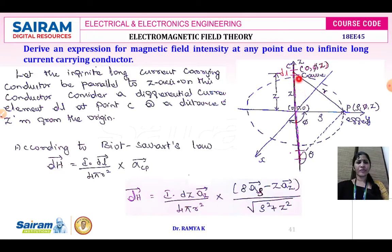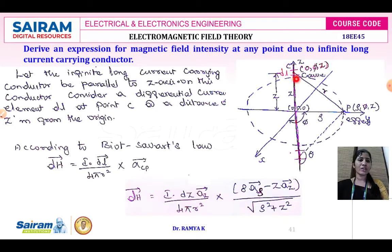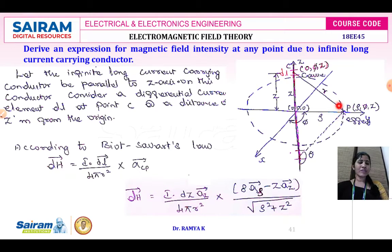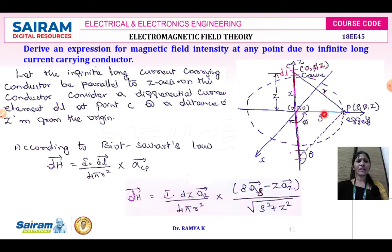Consider this diagram — here you have an infinite long current-carrying conductor placed parallel to the z-axis. Since the conductor is infinite, we consider a differential current element at point C, which is at a distance of z meters from the origin. The differential current element is i·dl. Point P is where we want to identify the magnetic field intensity, so point P is the effect and point C is the cause. Point C is at a distance of z meters from the origin, and point P is at a distance of rho meters from the origin along the y-axis.